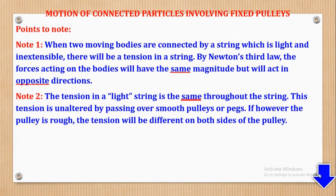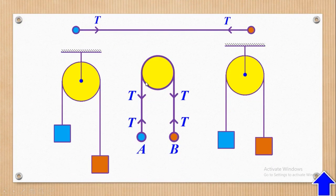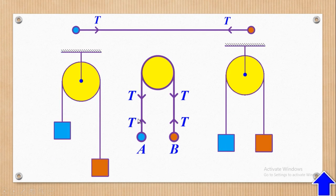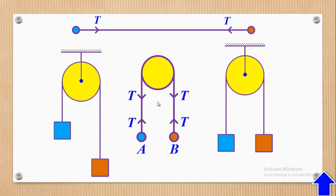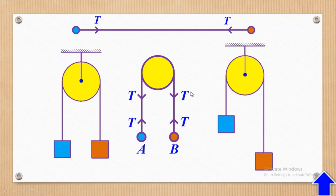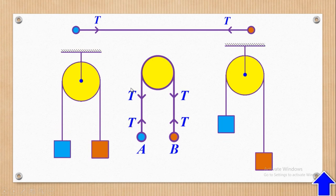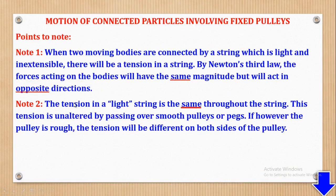If the pulley is rough, the tension will be different on both sides of the pulley. In our case, at our level, we consider the pulley to be smooth, which is why the tension is the same throughout the string — this T is the same as this T and the same throughout.